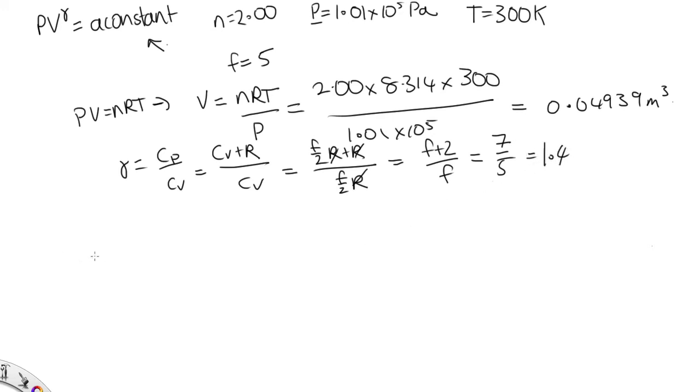OK. Now, all we need to do to find the constant is substitute in P is 1.01 times 10 to the 5 pascals. V is 0.4939. Oops. We left off the 0. 0.04939 meters cubed. And then gamma is to the 1.4.